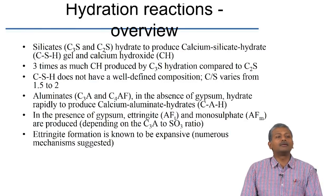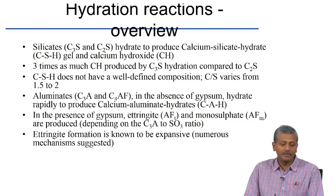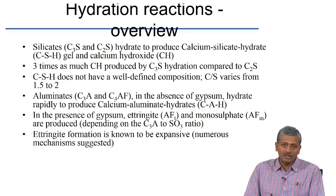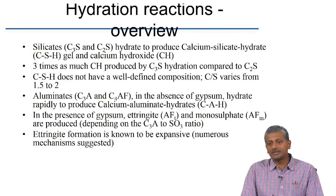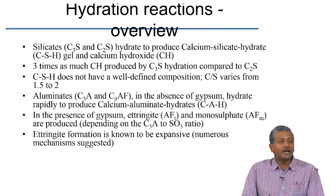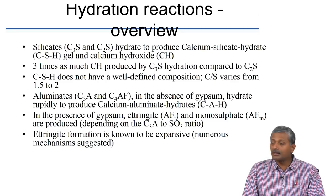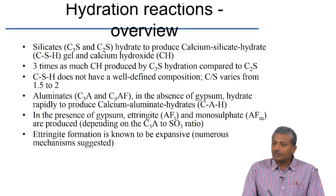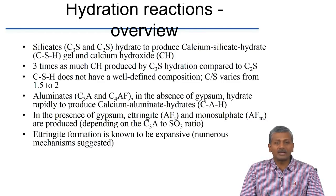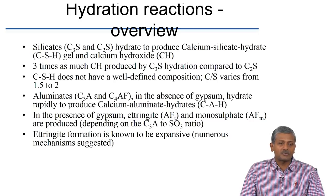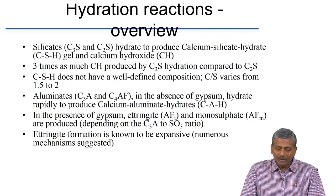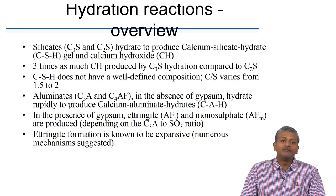Looking at the overall reactions: silicates C3S and C2S react directly with water to produce CSH (calcium silicate hydrate), which is the primary binding component of cement paste, and also produce calcium hydroxide. The stoichiometry shows that 3 times as much calcium hydroxide is formed by C3S hydration as compared to C2S hydration. Since normal Portland cement contains much more C3S than C2S, substantially large amounts of calcium hydroxide form upon hydration.